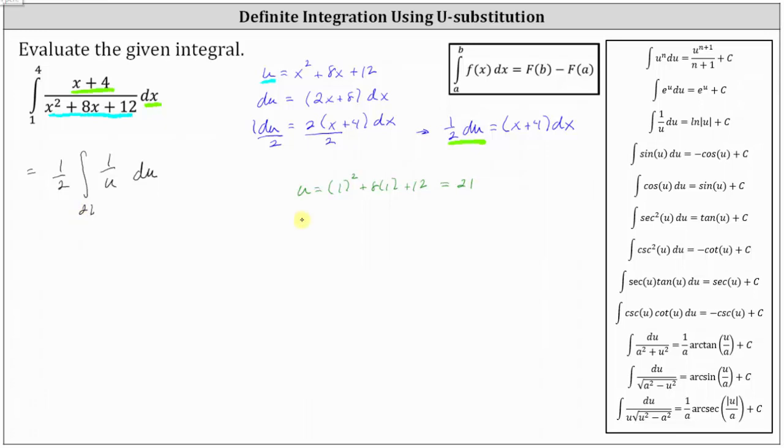And when x is equal to 4, u is equal to the square of 4 plus 8 times 4 plus 12. 16 plus 32 plus 12 is equal to 60. 60 is the upper limit of integration for u.